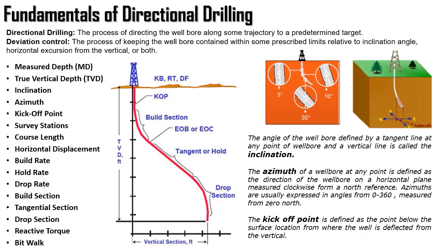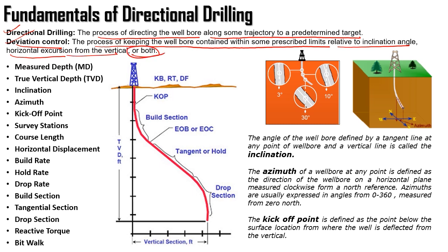Coming to fundamentals of directional drilling. Directional drilling is defined as the process of directing the wellbore along some trajectory to a predetermined target. Deviation control is the process of keeping the wellbore contained within some prescribed limits relative to the inclination angle, horizontal excursion from vertical, or both. I will be discussing many terms related to directional drilling: measured depth, true vertical depth, inclination, azimuth, kickoff point, survey stations, course length, horizontal displacement, build rate, hold rate, drop rate, build section, tangential section, drop section, reactive torque, and bit walk.